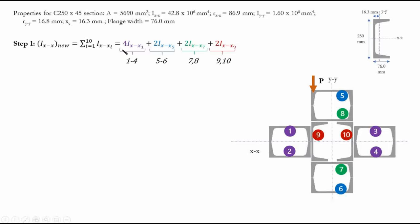In the formula, we use 4·IXX1 to account for channels 1, 2, 3, and 4 — each has the same effect so we multiply one value by 4. Similarly, we use 2·IXX5 for the next group, and so on. Now let's calculate IXX1: we find each value separately using the parallel axis theorem and add them together.